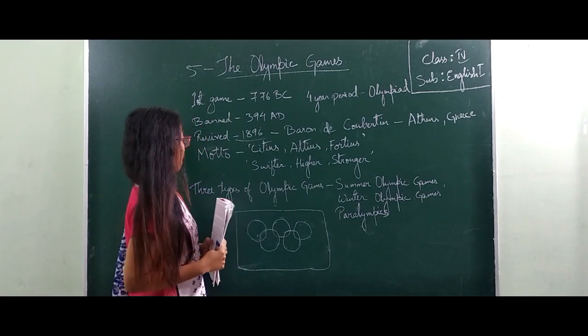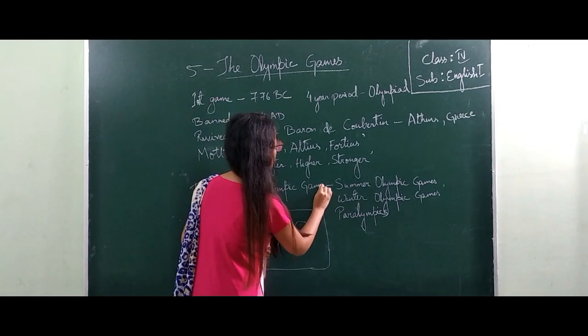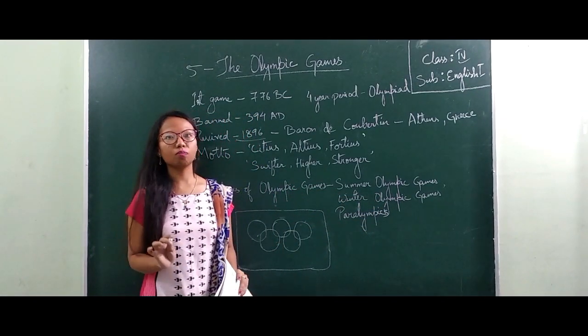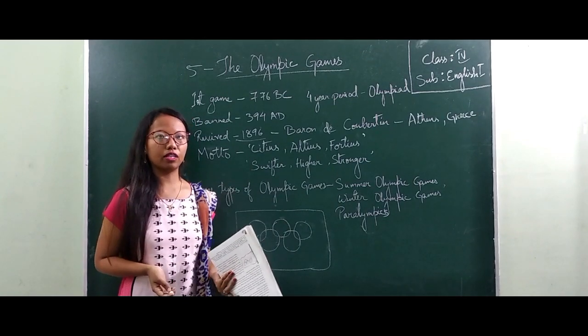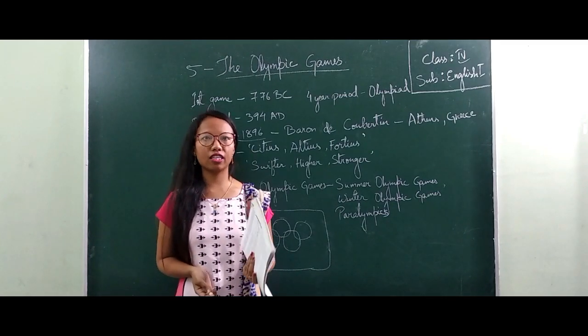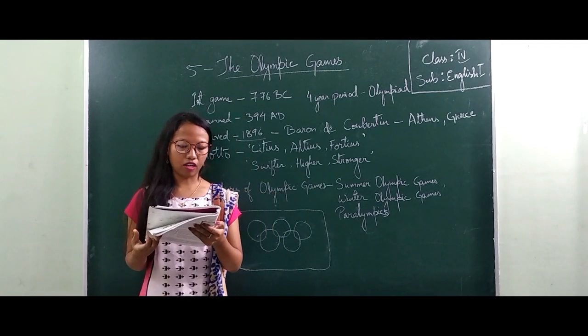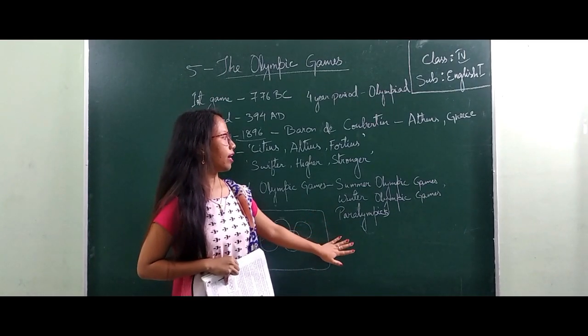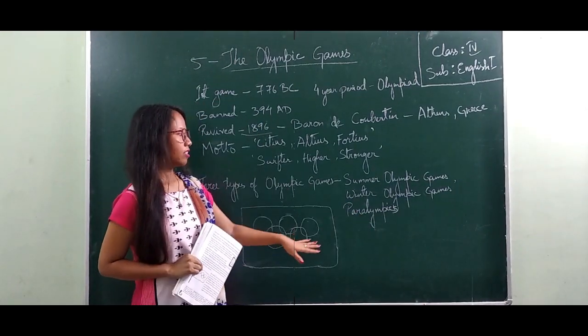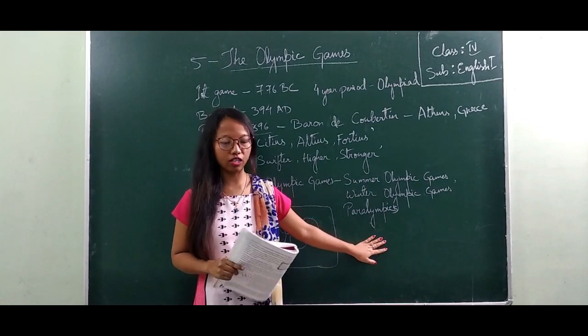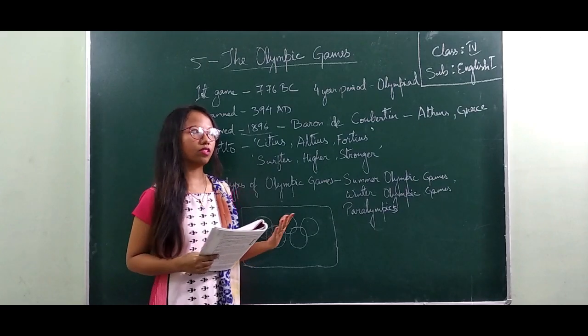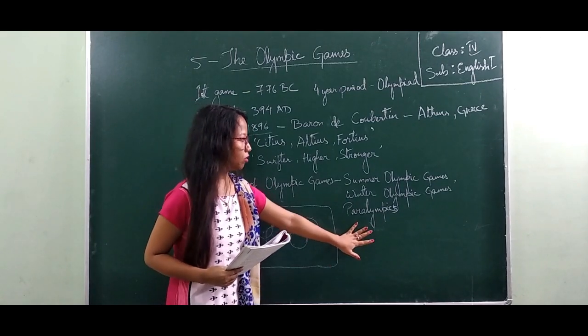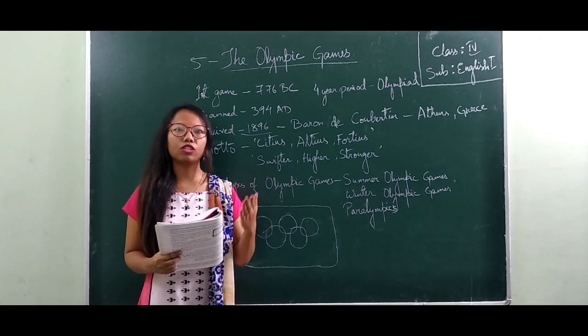So there are three types of Olympic Games, which is the Summer Olympic Games, the Winter Olympic Games and the Paralympic Games. Most of the games can be played in winter also, like for example we have skiing, figure skating, ice hockey and all. So these games which are played on ice or on snow are included in the Winter Olympic Games. Next, the Paralympic Games are especially for the visually challenged people or physically challenged people. Because most of them also wanted to play, there are some sports which they want to participate in. So this particular games was introduced for the visually challenged or the physically challenged people.